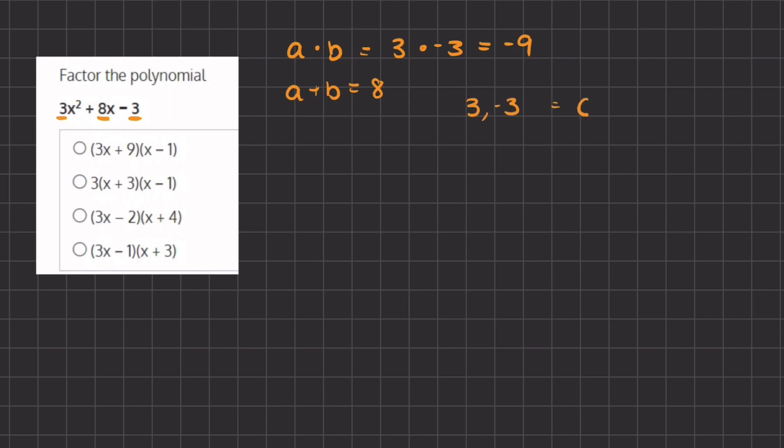So this is not correct because we need to find a number that adds to 8. If we have 1 and negative 9, we get negative 8, and we want a positive 8.